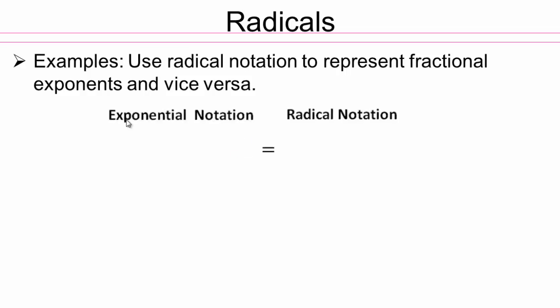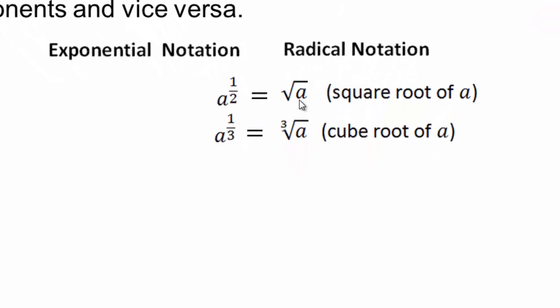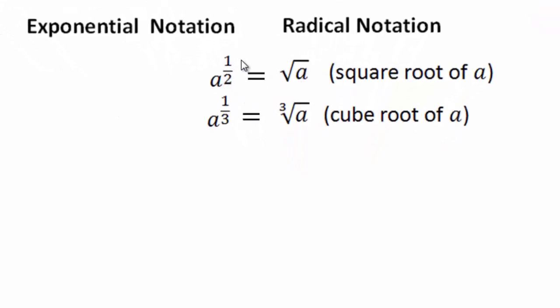So we'll go back and forth. a to the power one-half is the same as writing square root of a. a to power one-third is the same as cube root of a. You should be able to recognize this as square root and that square root as a to one-half.